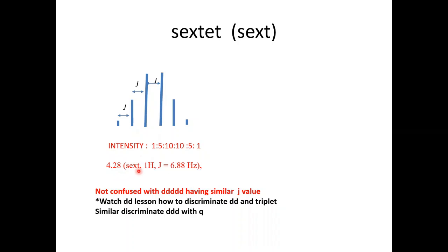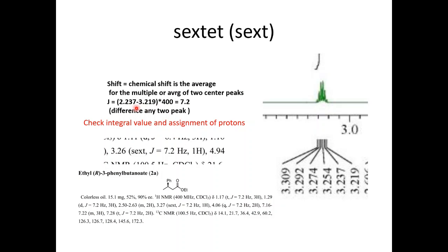So the short form of sextet is SEXT when hydrogen J telecolyze. And now how you report the chemical shift, just like this. So this is a real example. I took a spectra from a journal supplementary information. So the chemical shift is the average of the multiplet. You can click on this one, click on this one, take the value and average it, or you can take the average of two center peaks.